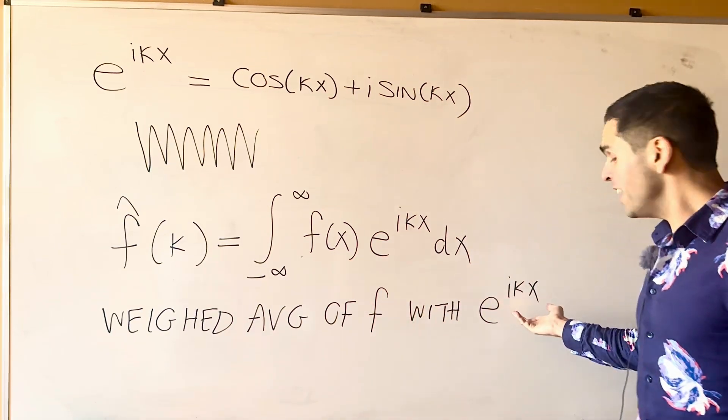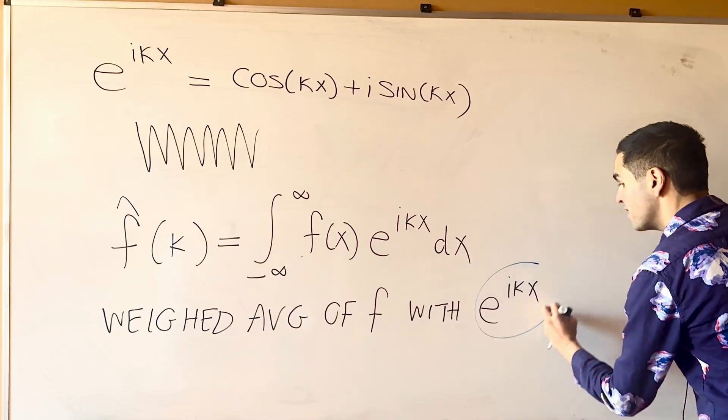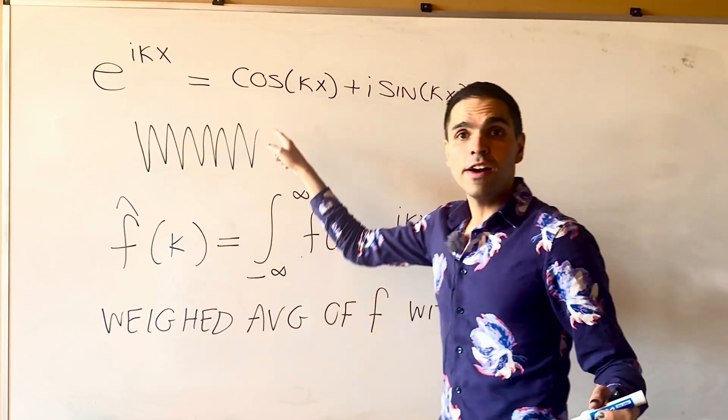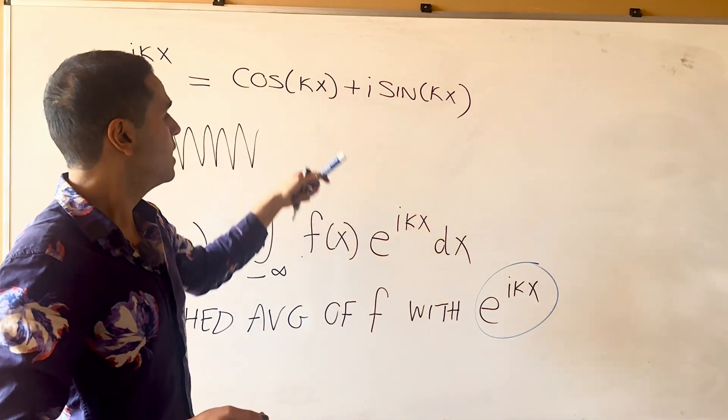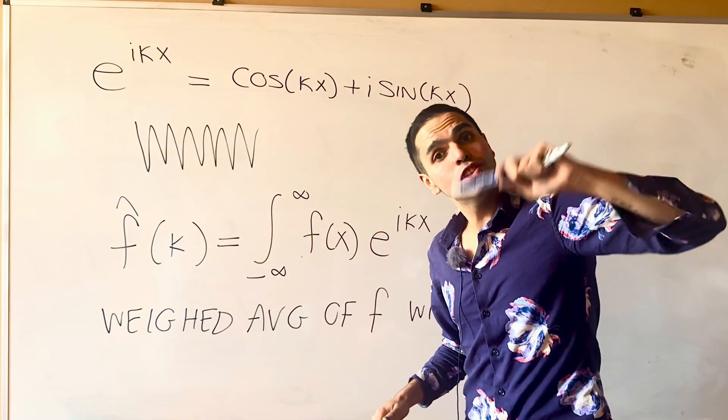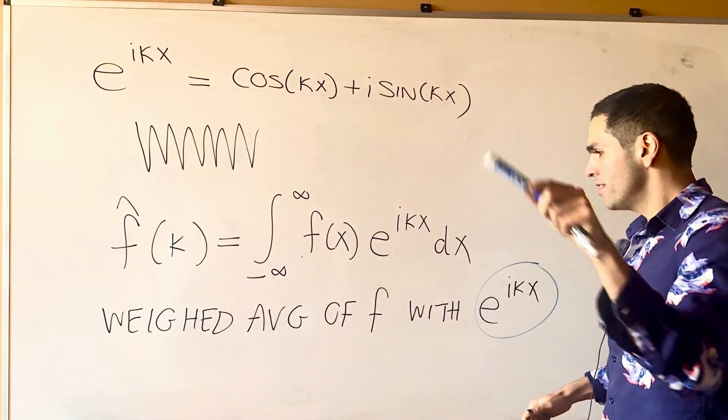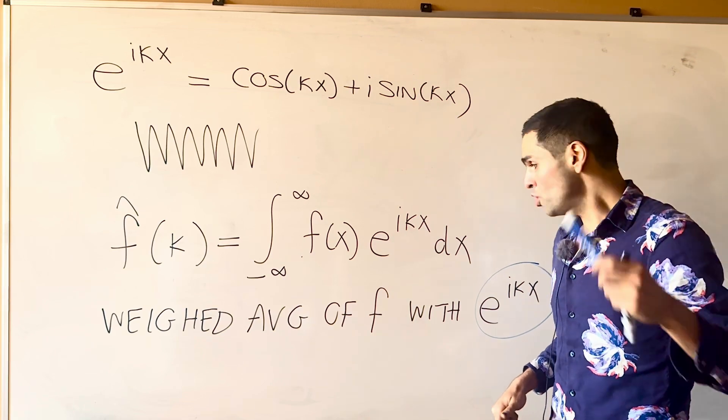And, the way I interpret this is, those e to the i kappa x, they spin around more and more quickly. So, if, for instance, kappa is 9,000, it would be cosine of 9,000 x, which is very, very wild. So, think almost like a record player that just spins around super quickly.